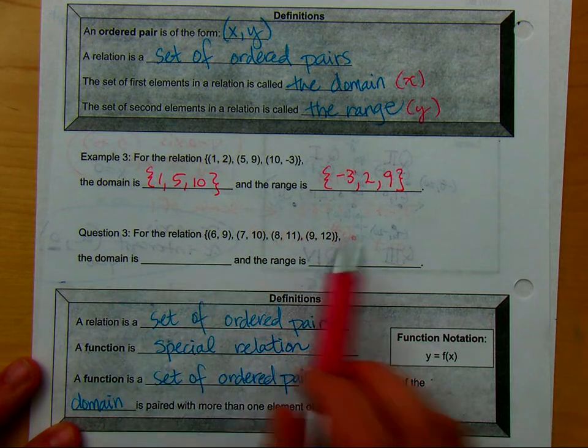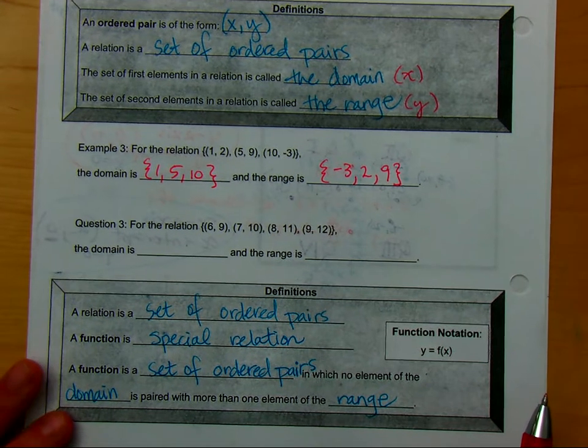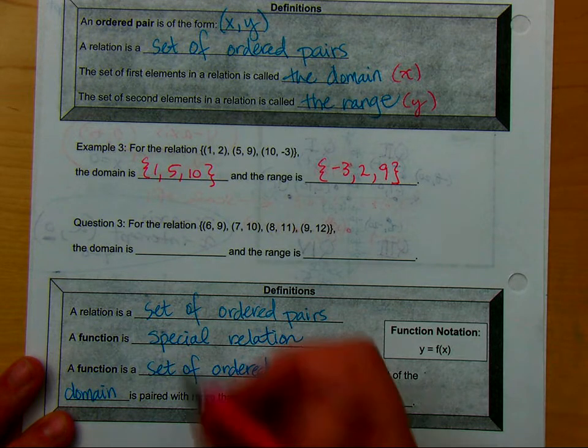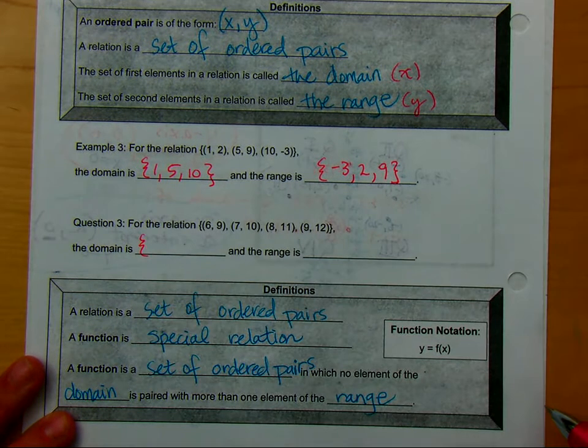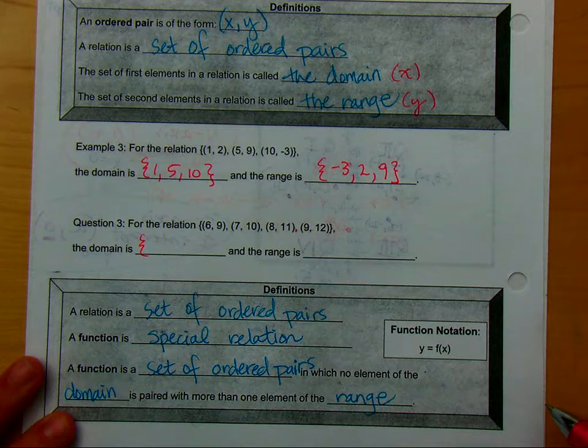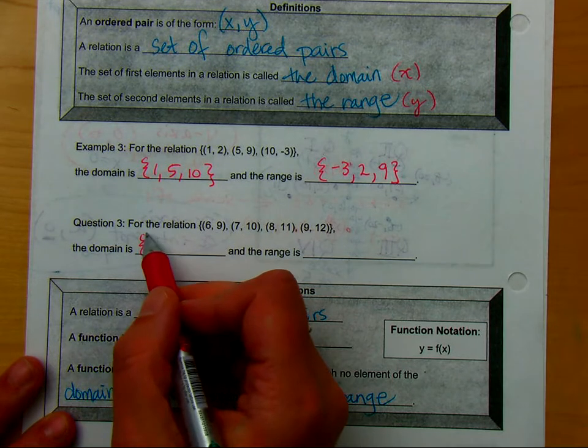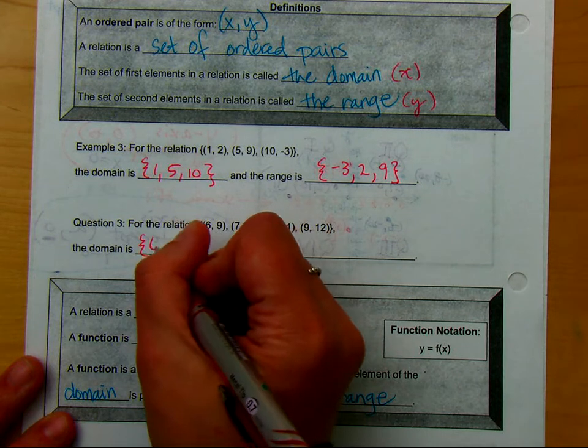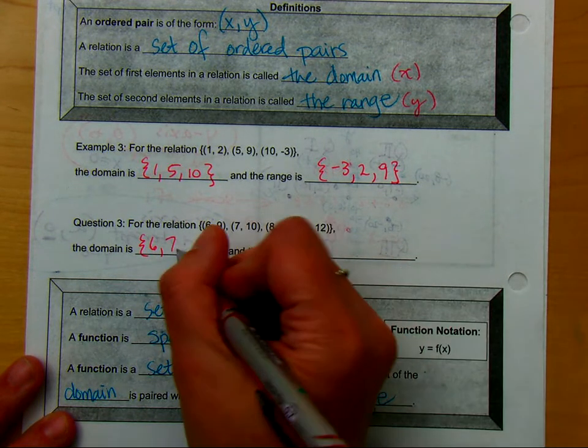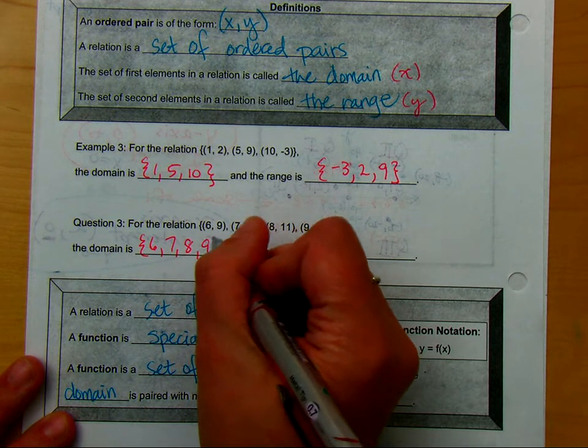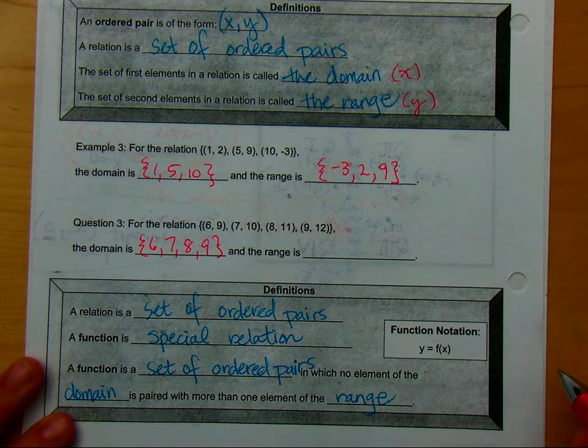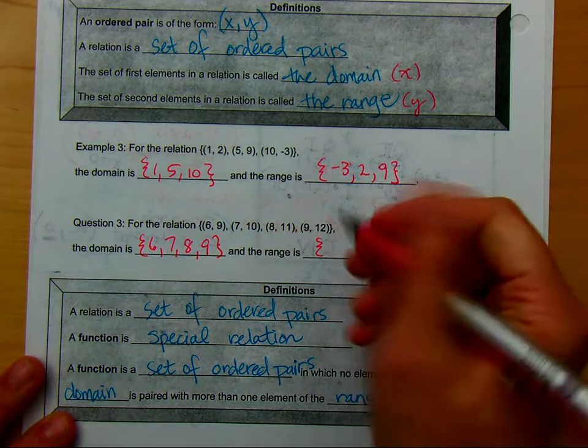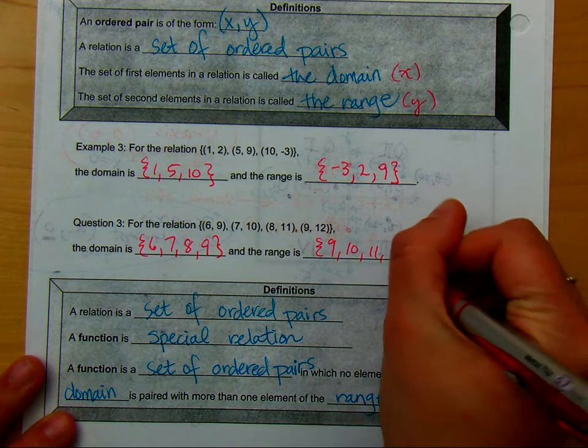For the next relation, go ahead and take a moment and decide what the domain and the range is, and then we're going to share out. Okay, so who can tell me what they got for the domain? And we're using these set notation. That's what the braces are for. So did you get 6, 7, 8, and 9? And who can tell me what they got for the range? Yep, 9, 10, 11, and 12.